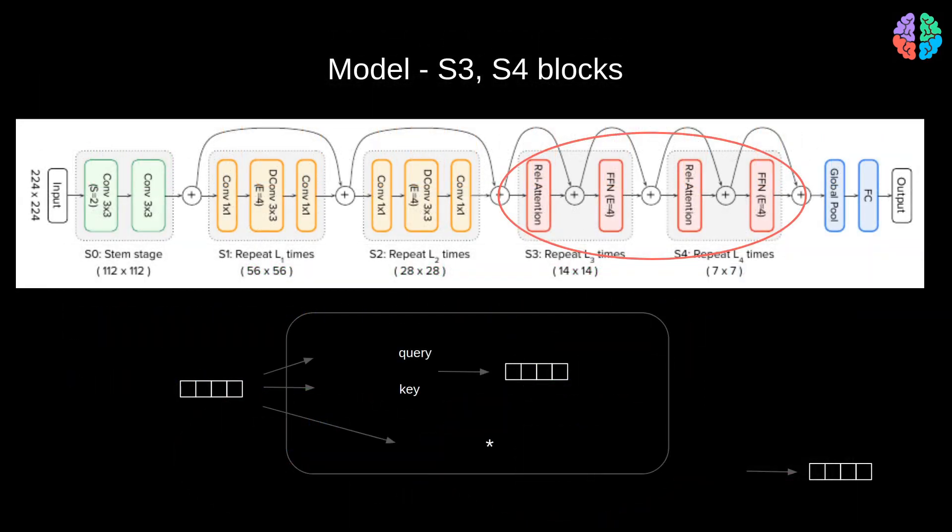Attention is the main component of transformer block. What happens in an attention block is that the input is first split into three components namely query, key and value. The dot product of query and key is treated separately to that of the value. As we are dealing with relative attention, we introduce a learnable parameter p used to compute a relative bias which is added to the dot product of query and key.